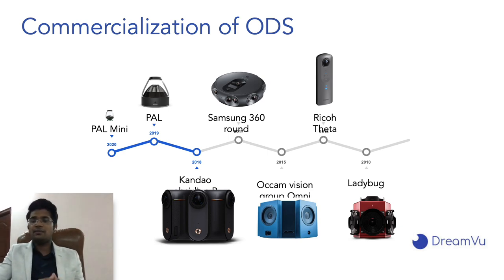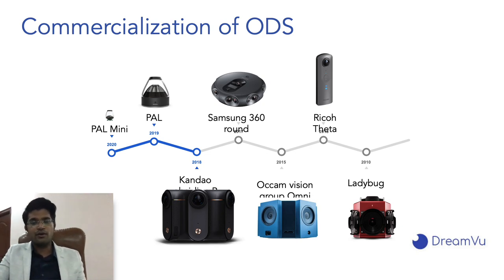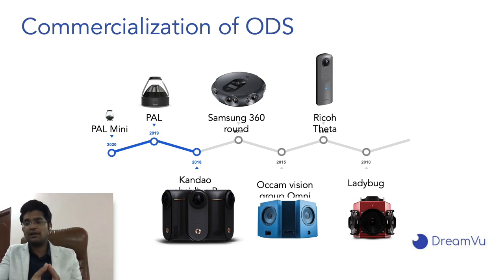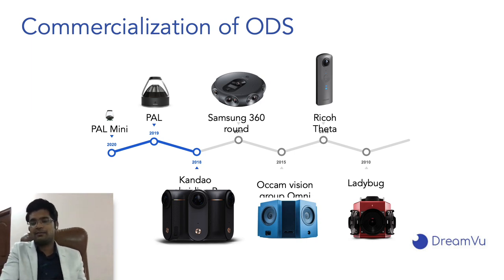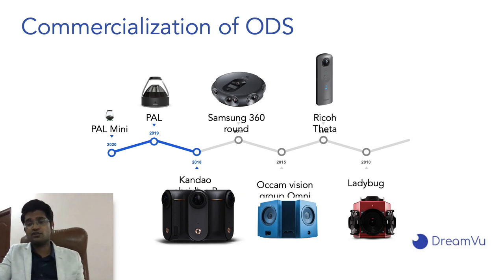In the industry we have seen many devices emerge for multiple applications: Ladybug cameras and Samsung 360 and Kandao for virtual reality video captures, Rico for indoor mapping. Recently DreamView released the world's only 360 stereo camera in 2019 — a high-resolution single sensor omni stereo camera applicable to virtual reality, robotics navigation, localization, mapping, and other indoor use cases. In 2020 DreamView also released its most compact omni stereo camera, the PAL Mini, suitable for indoor robot navigation and in-cabin driver monitoring.